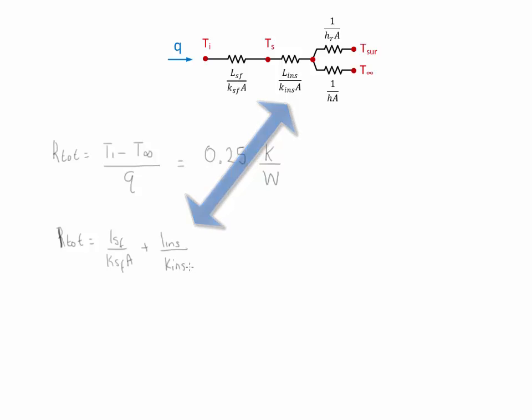Notice that these two components are in series. Then we have the radiation and convection components. These two are in parallel, so we add them as one over the sum of their reciprocals.